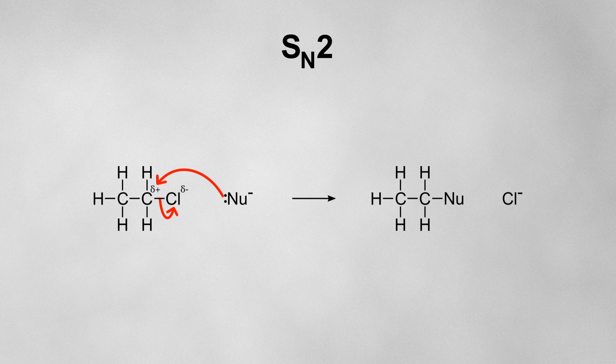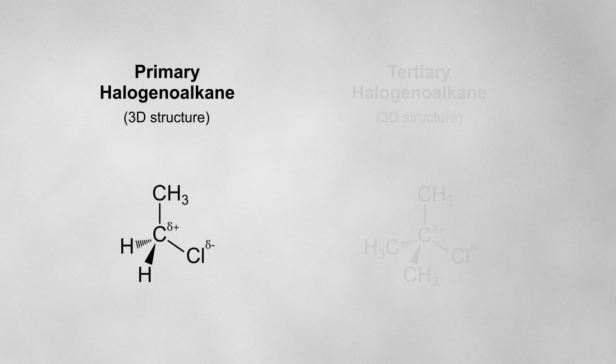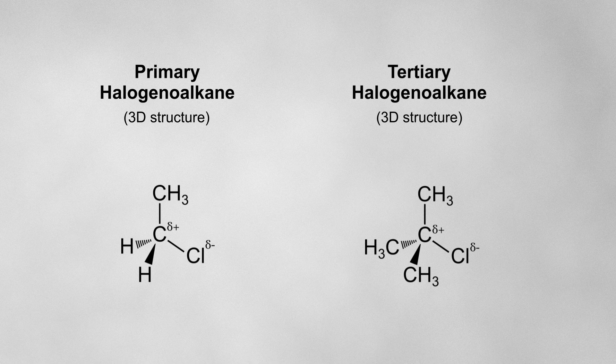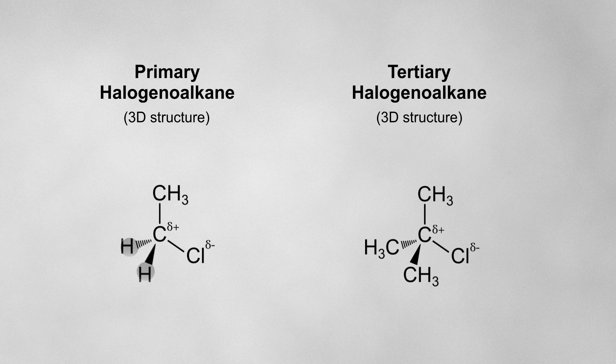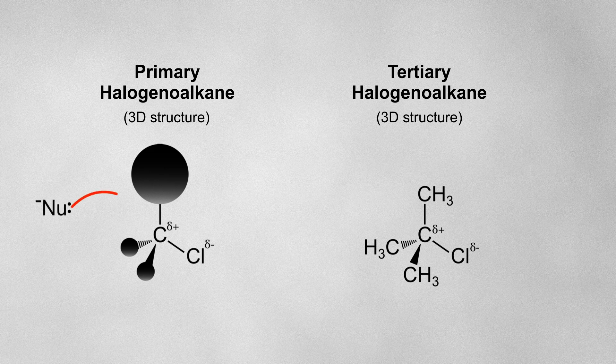As for SN2, the biggest barrier for this mechanism is whether or not a nucleophile will be able to find its way to the delta plus carbon atom to form a covalent bond. Let's compare a primary and a tertiary halogeno alkane. The delta plus carbon on the primary halogeno alkane is bonded to two small hydrogen atoms and only a single bulky alkyl group. This means the delta plus carbon is more exposed, so it's easier for a nucleophile to attack it.